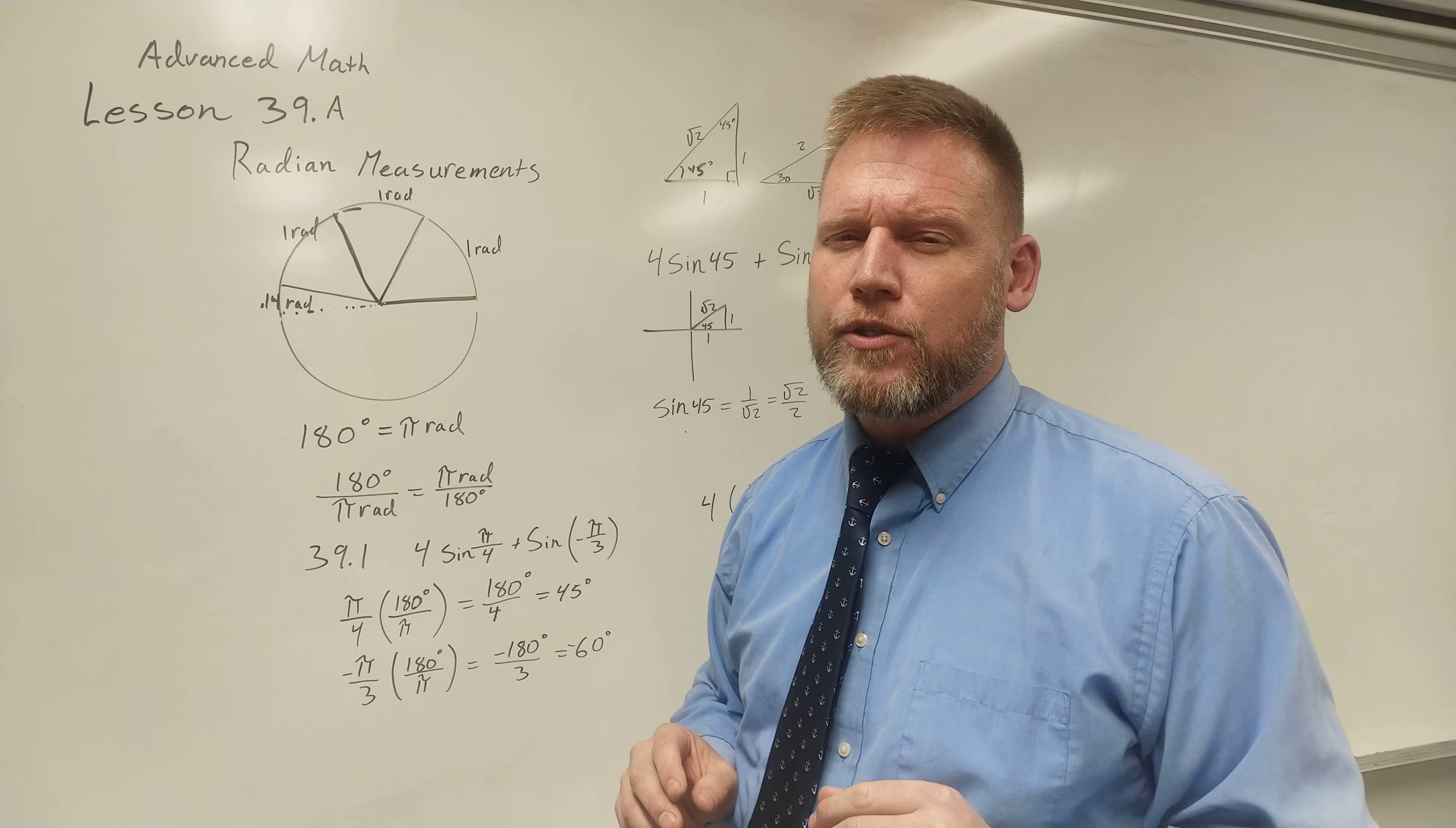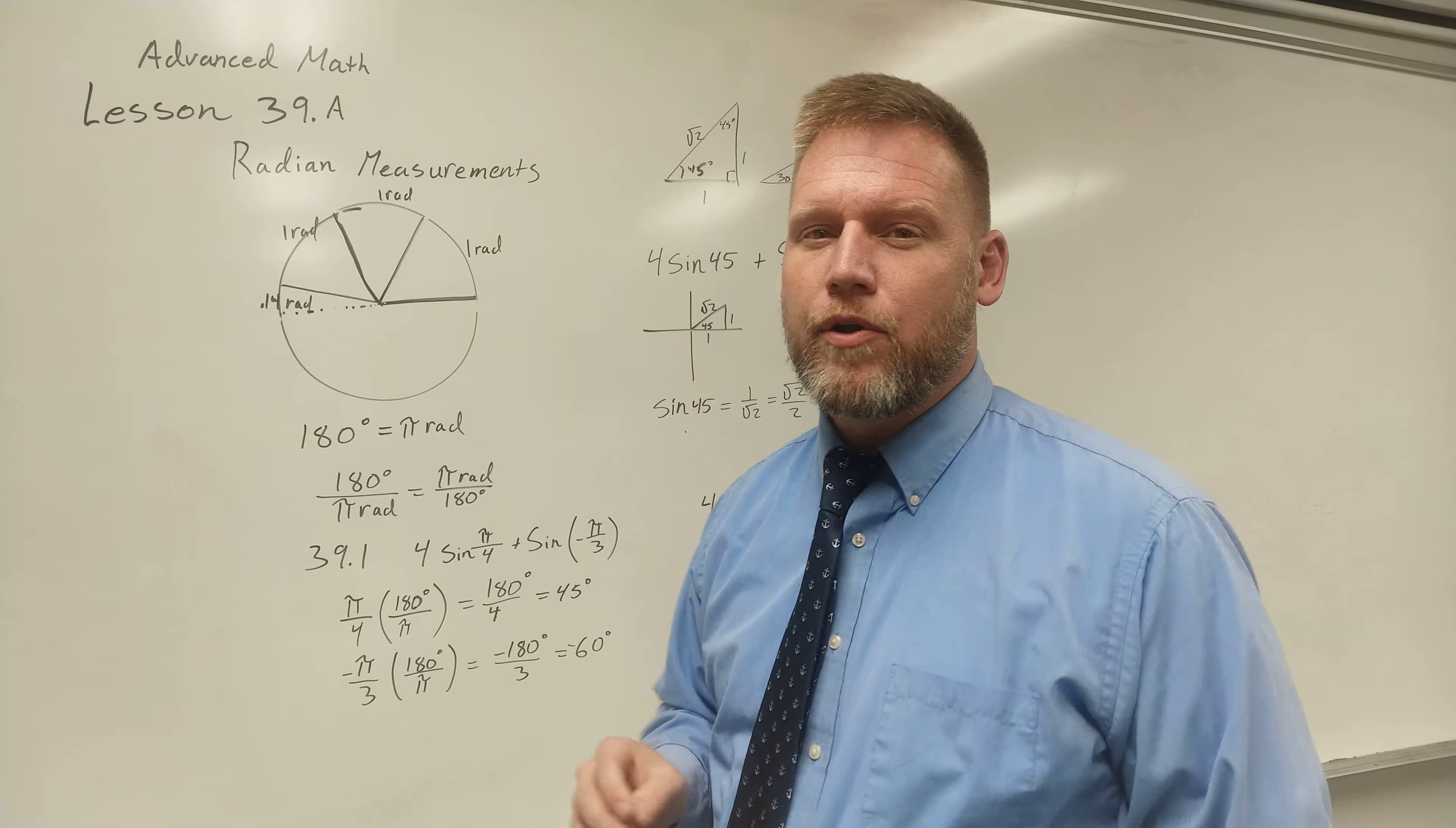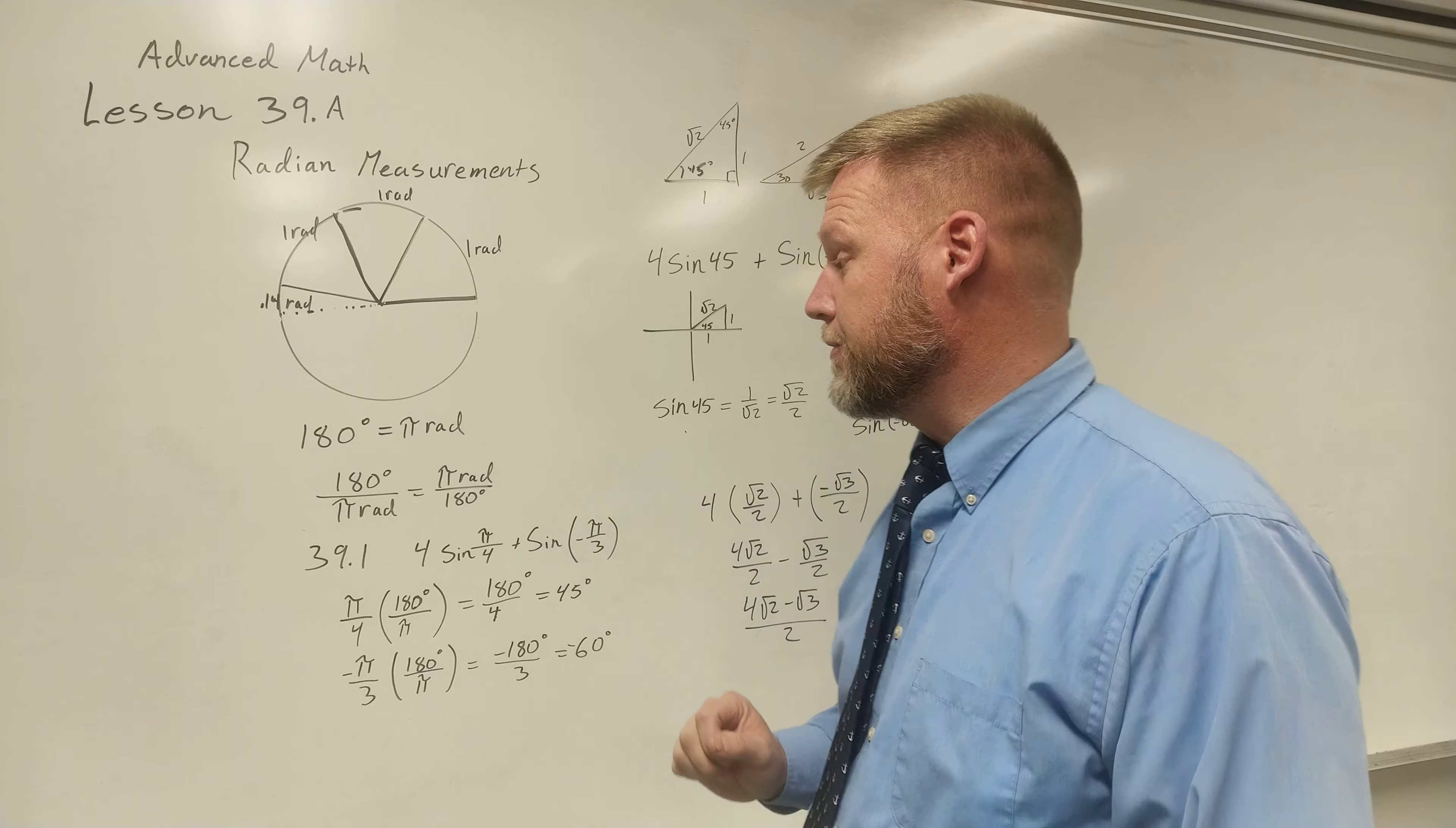Many times in math, it's better for us to go ahead and use radians. But in this lesson, we're just introducing what a radian is and how to work with it with the special triangles we've already worked with. When we look at this circle, I remember that 180 degrees is π radians, or 360 degrees is 2π radians.